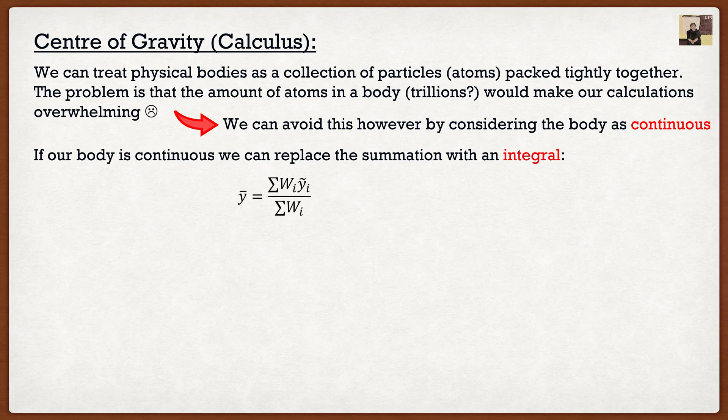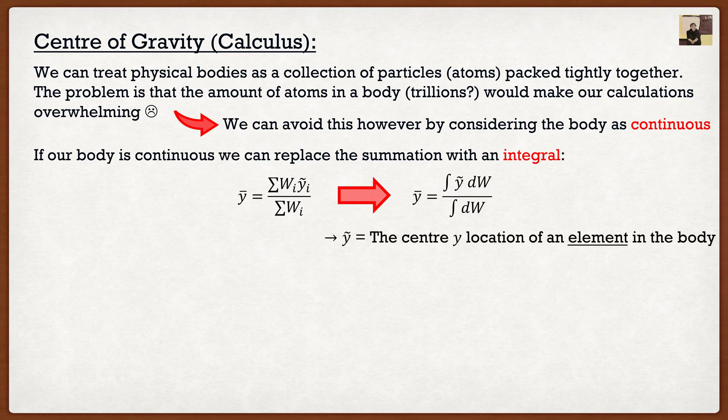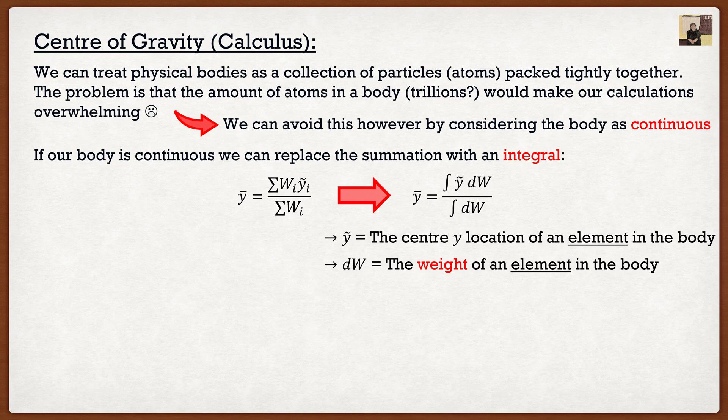I can replace this with y bar is equal to the integral of y squiggle dw divided by the integral dw, where y squiggle is the center y location of the elements in our body. And then the second one, dw, is the weight of the elements within the body.